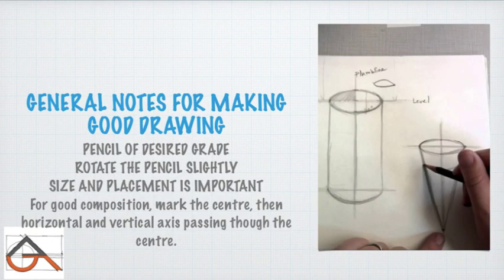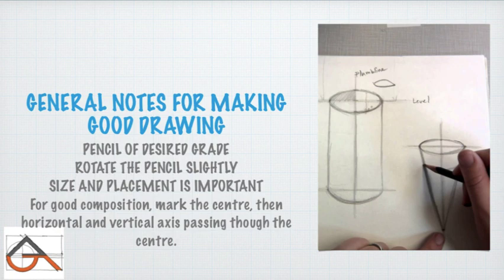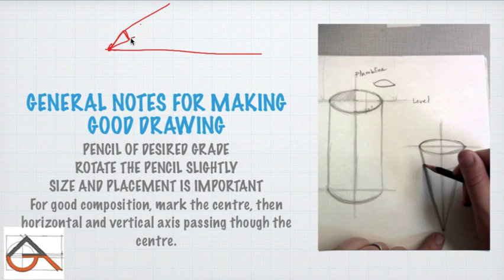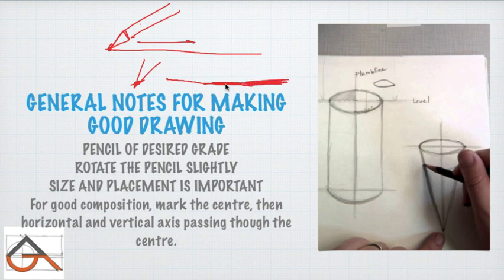General notes for making good drawings: first, use a pencil of the desired grade. If you are using 4H on bad paper, the shading won't work. If you use 4B, the lines will be thick and dark. So the pencil grade has to be right. Also, rotate the pencil slightly as you draw — with continued friction the point wears down unevenly, so rotating it keeps the point consistent and the lines uniform.